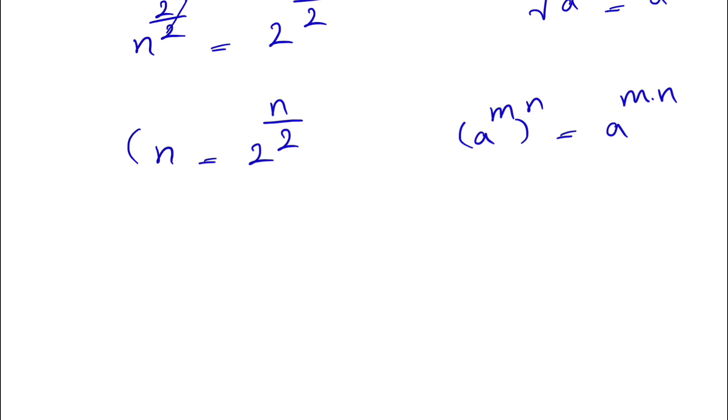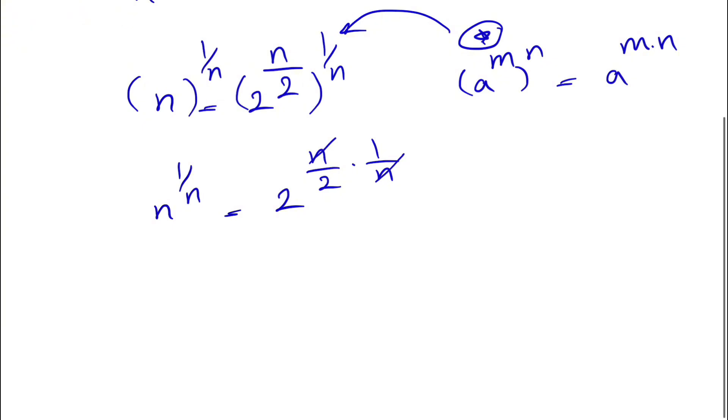So if we do the power of 1/n on each side of the equation, what we'll end up with is that n to the power of 1/n equals 2 to the power of—we're going to use that law here. So we'll have basically 2 to the power of n/2 times 1/n. So now we can cancel out the n and what we'll end up getting is n to the power of 1/n equals 2 to the power of 1/2.